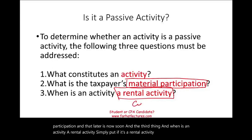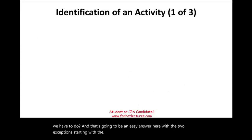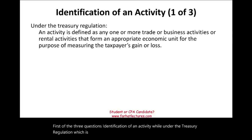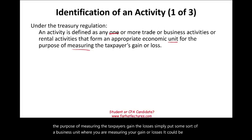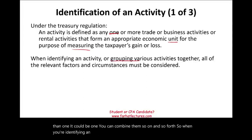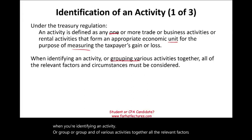Starting with the first question — identification of an activity. Under Treasury regulations, an activity is defined as one or more trade or business activities or rental activities that form an appropriate economic unit for measuring the taxpayer's gain or losses. It could be more than one, it could be one, you can combine them. When identifying or grouping activities together, all relevant factors and circumstances can be considered. You could have one unit or multiple units grouped together or separate.